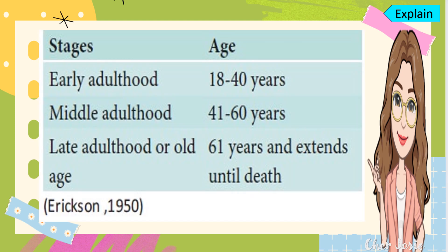Adulthood is also divided into three stages: early adulthood from 18 to 40 years old, middle adulthood from 41 to 60 years old, and late adulthood — or old age — from 61 years old and extending until death.